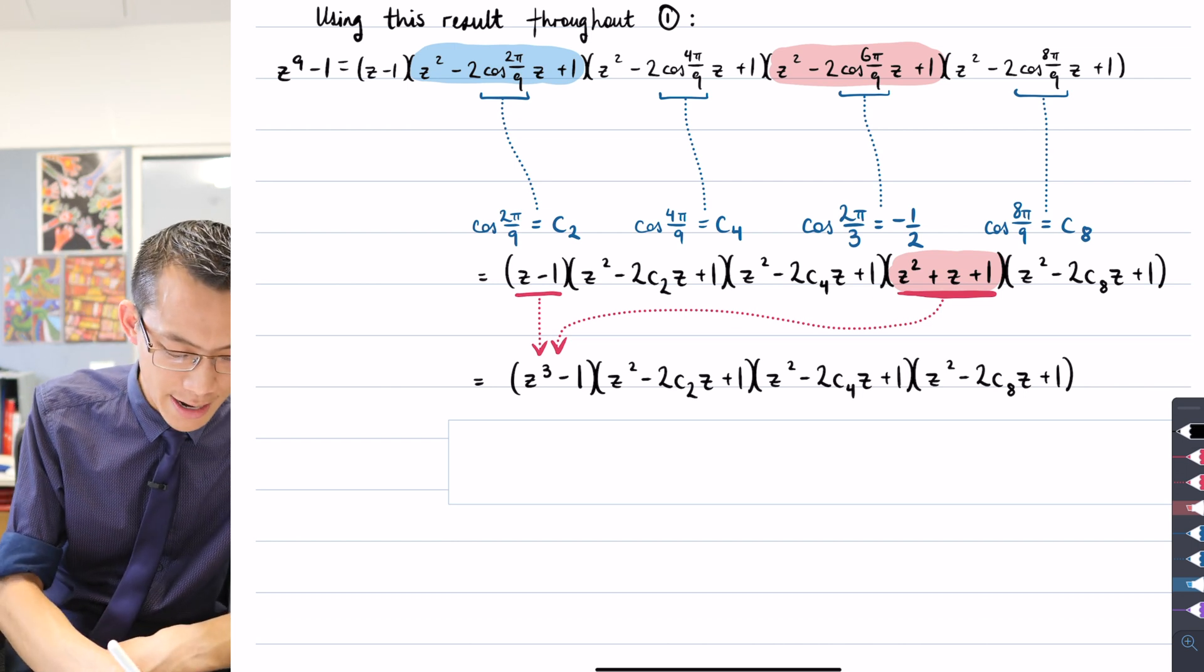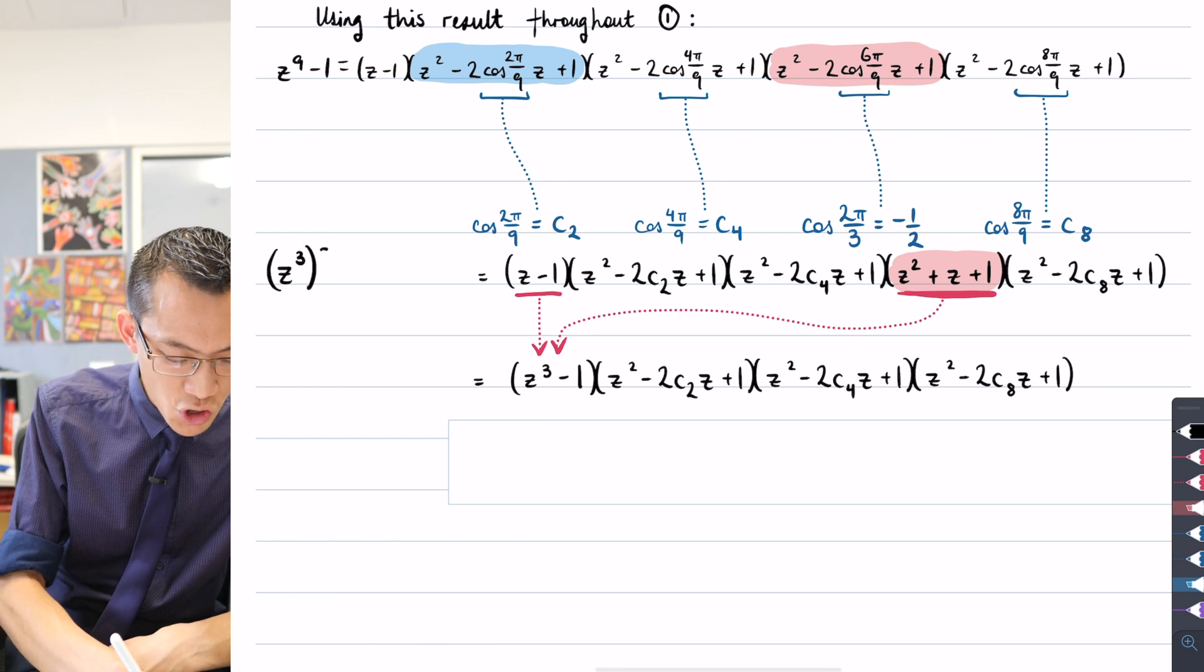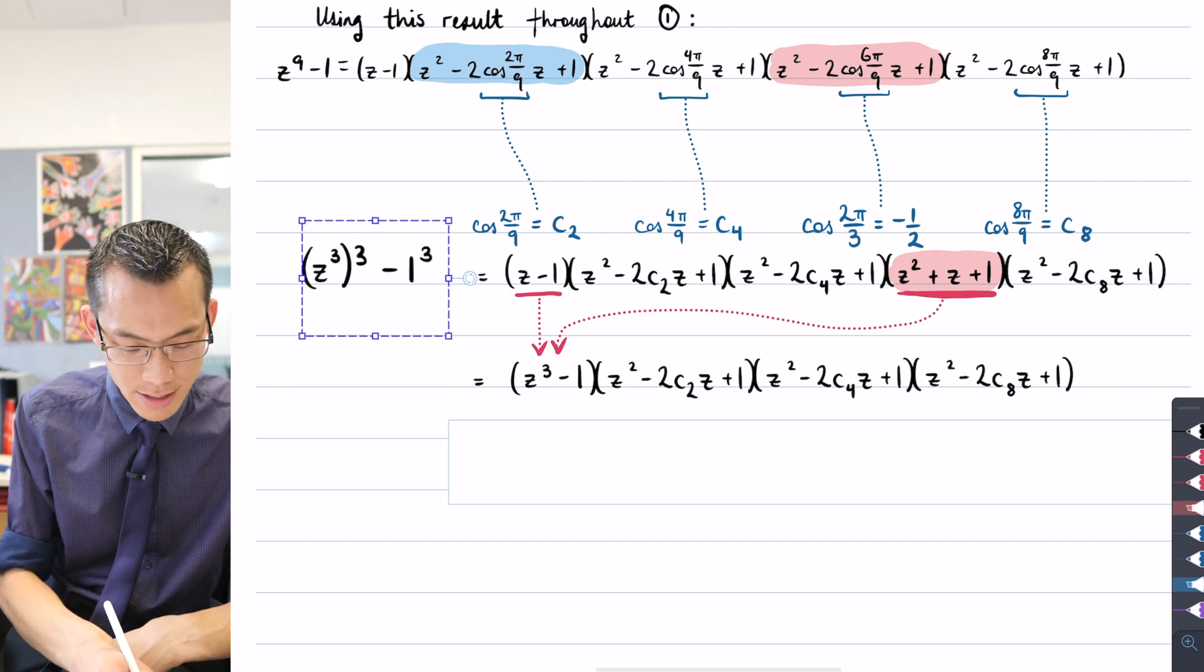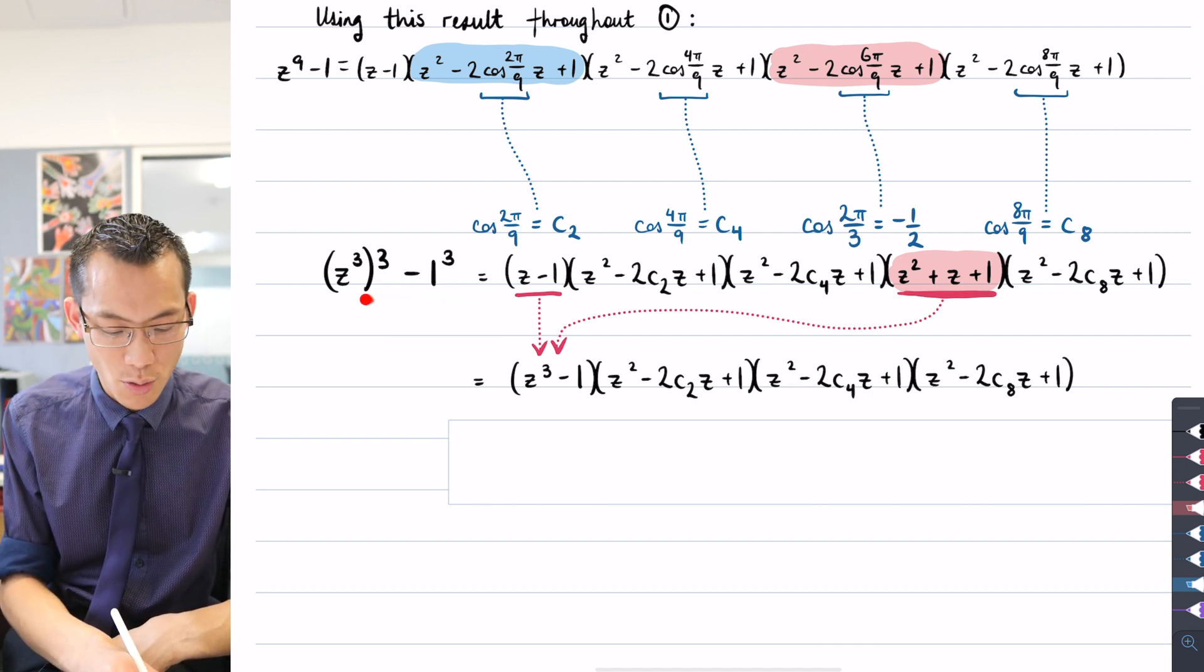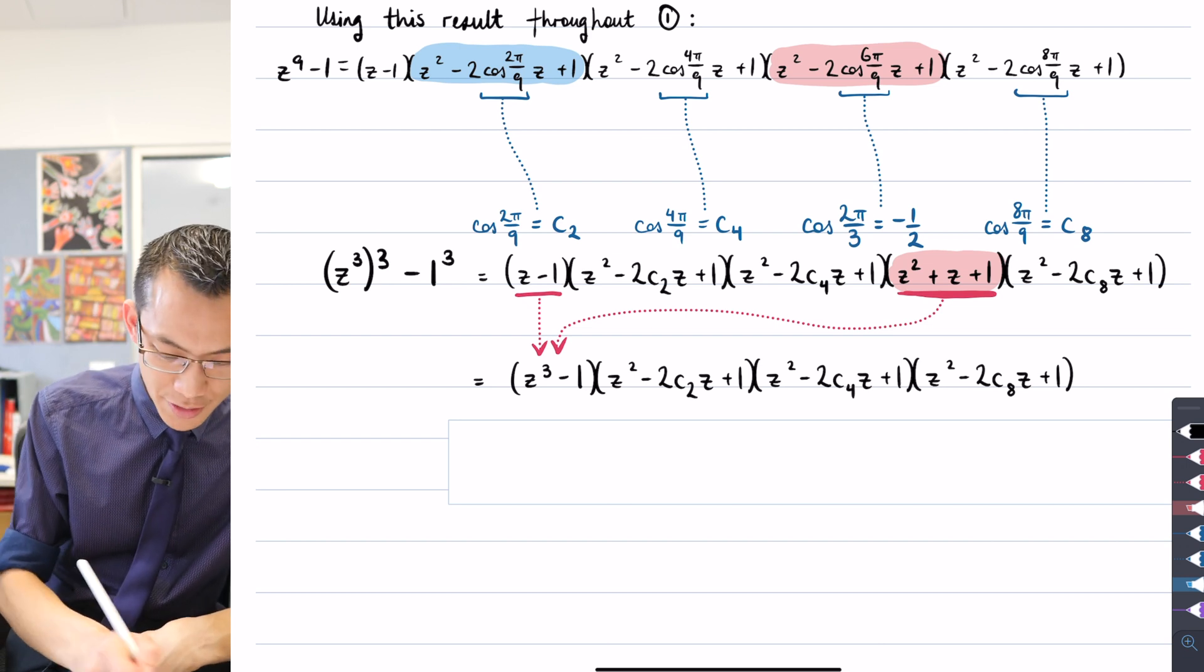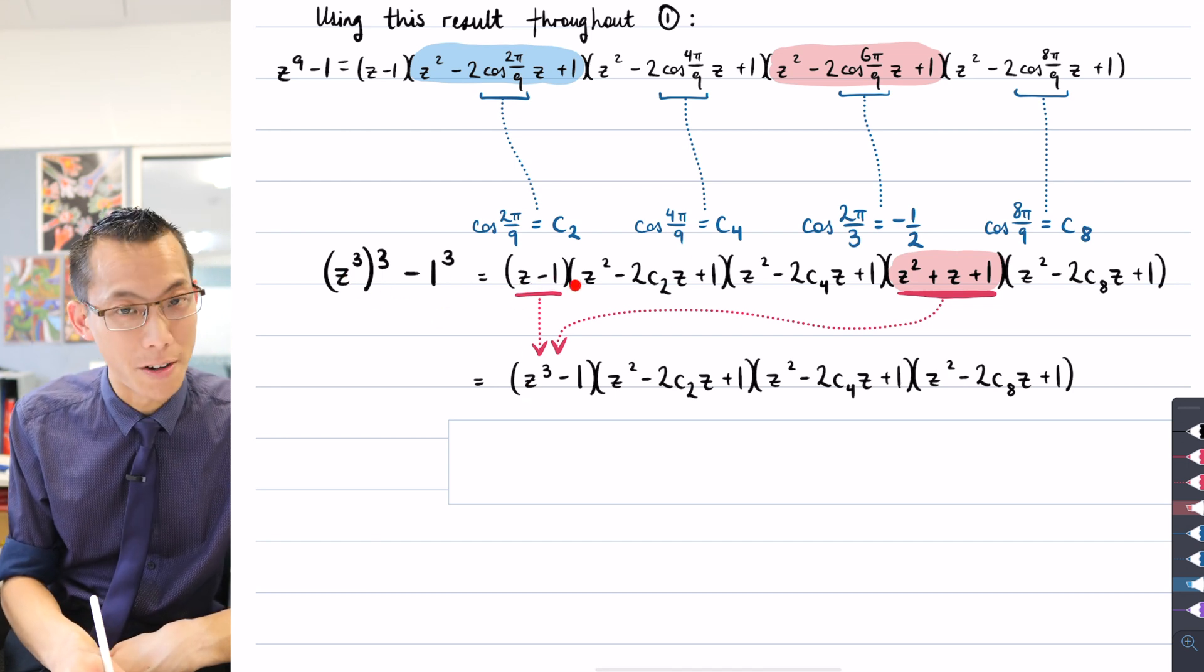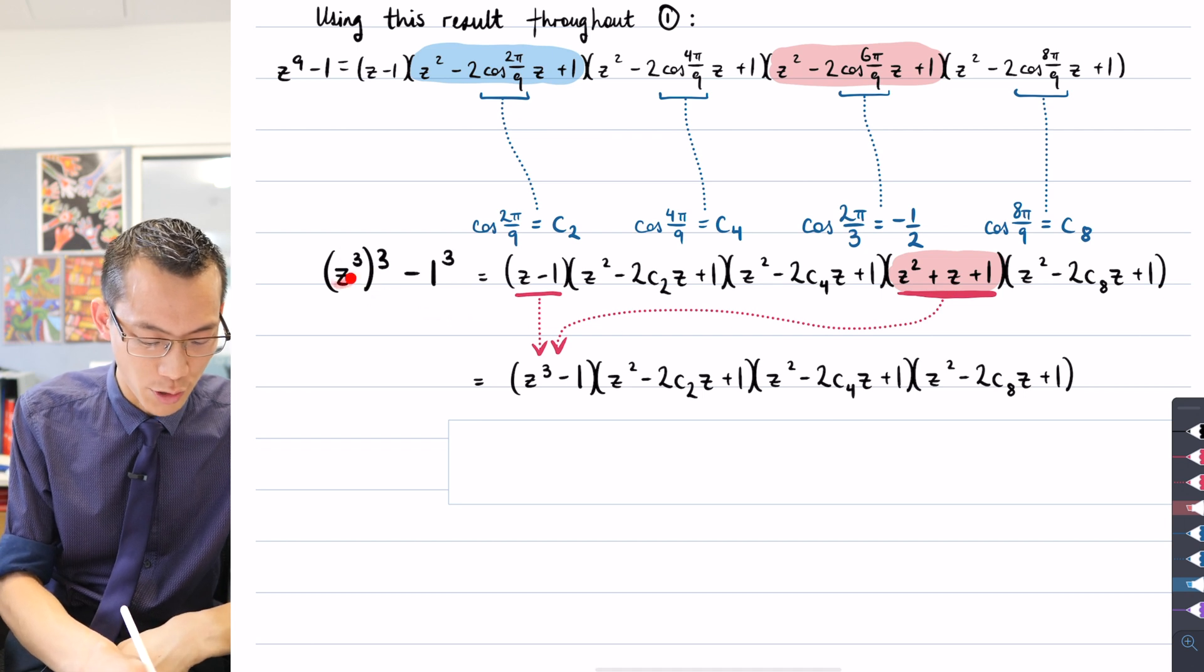So I would rewrite z⁹ as, thinking about my index laws, it's (z³)³. That's z⁹, right? That, take away 1, that's, well, 1 is also 1³. So you can see now beyond the shadow of a doubt, this term here, from z⁹-1, this is a difference of cubes. So what is the factorization of this going to look like? Well, I'm going to have the same kind of factorization that I had over here, and here, except instead of (z-1), it's going to be (z³-1). Instead of z², it's going to be (z³)², and then instead of z, it's going to be z³. That's what I've got here.